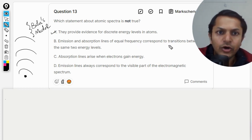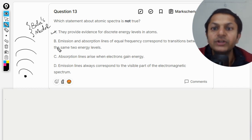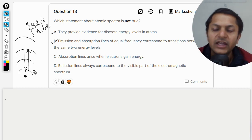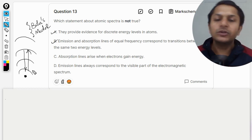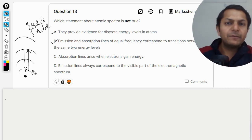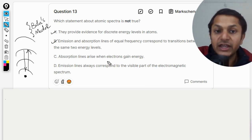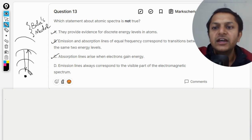Now, emission and absorption lines of equal frequency correspond to the transition between the same two energy levels. Absolutely correct. So if you are falling from the third to one or you're going from one to three, the energy will be the same, but the only thing is in one case it will be absorption spectra, in another case it will be emission spectra, but the frequency will be same, energy will be same. Now see, absorption line arise when electrons gain energy. Absolutely correct.